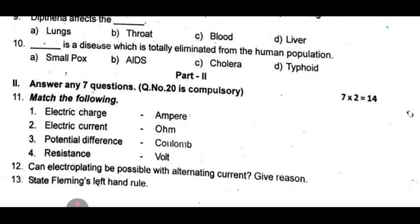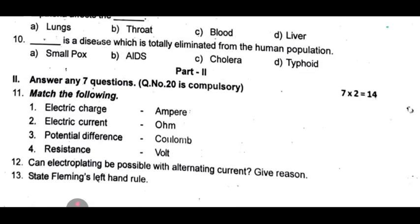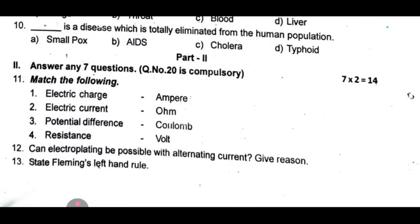12th one: can electroplating be possible with alternating current? Give reason. 13th one: state Fleming's left hand rule.